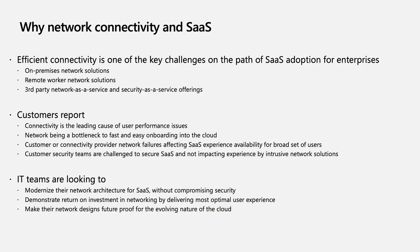When we work with customers, we hear that network connectivity is a critical ingredient in their software as a service cloud journey. Efficient connectivity is also one of their biggest challenges, both for connecting on-premises environments to the cloud and in empowering remote worker connectivity scenarios, as well as engaging a variety of solution providers offering network as a service and security as a service. Customers often report that network connectivity is the leading cause of performance concerns, that the network can be a bottleneck in fast and easy onboarding into the cloud, and that failures at the network level — either on the customer side or on the network provider side — can have a substantial impact on SaaS experience for large quantities of users.